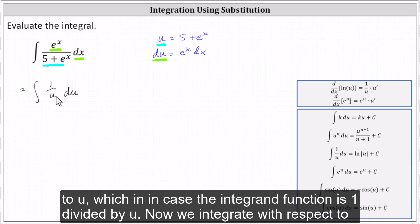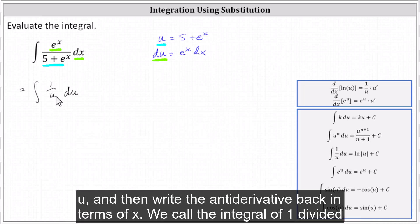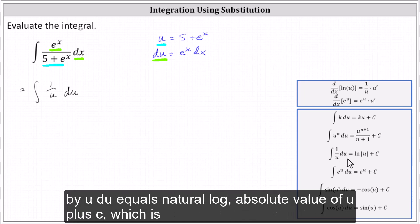Now we integrate with respect to u and then write the antiderivative back in terms of x. Recall the integral of 1 divided by u du equals natural log of the absolute value of u plus c.